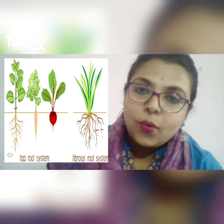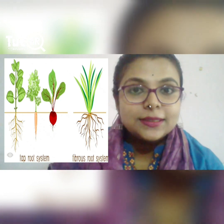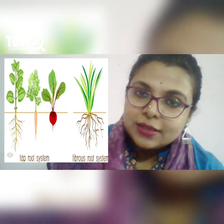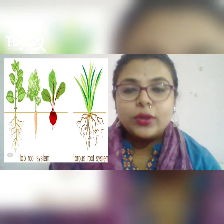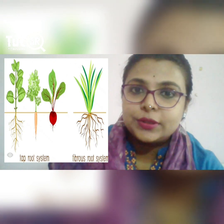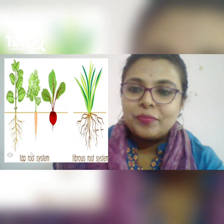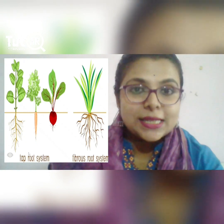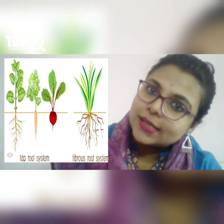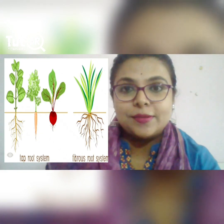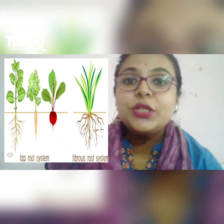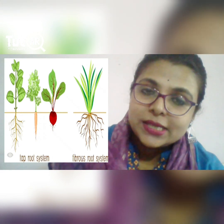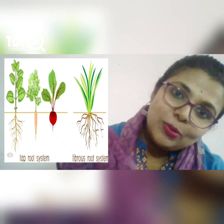Now we know the parts of plants, what roots are, and their functions. We will now discuss the types of roots. There are mainly two types of roots: the first type is the tap root system, and the second type is the fibrous root system. We will discuss both types in detail along with examples.